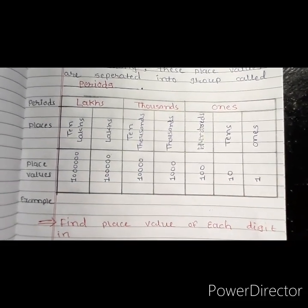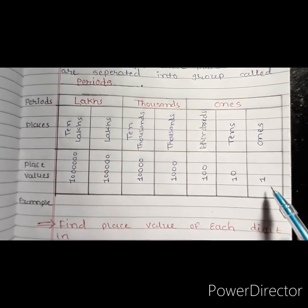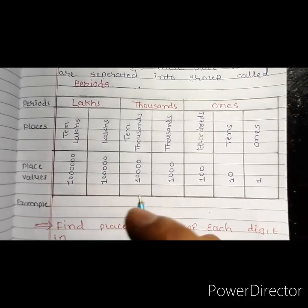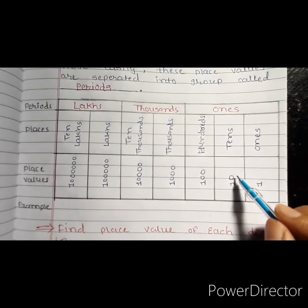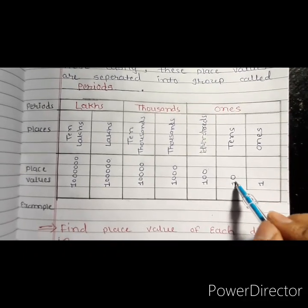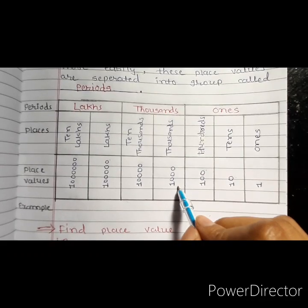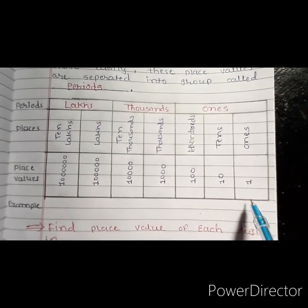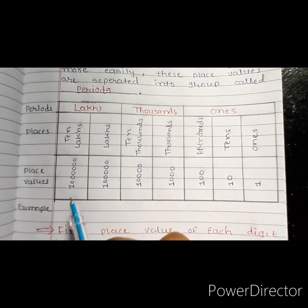So students, if you observe the place value chart and move from the right side to the left side, you can see here 1, then 10, then 100. So moving from right to left, one extra zero is added each time.